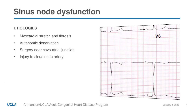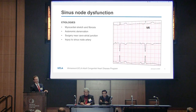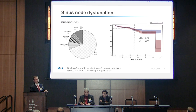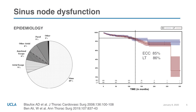Sinus node dysfunction — there are lots of reasons patients with Fontans can develop sinus node dysfunction, including myocardial stretch and fibrosis, especially after lateral tunnel and atrial pulmonary Fontans; autonomic denervation from prior surgery; manipulation near the cavo-atrial junction where the sinus node lives; and potential injury to the sinus node artery. If you look at the data on prevalence and incidence of sinus node dysfunction in the Fontan population, it's estimated to be around 15 percent. The pie chart on the left is from the Pediatric Heart Network study, a cross-sectional study showing junctional rhythm in about six percent of patients and paced rhythm in nine percent, for a total of 15. The Kaplan-Meier curve on the right is from a recent meta-analysis by the Montreal group, and for the modern versions — the extracardiac Fontan and lateral tunnel Fontan — they found an incidence of about 15 percent at 10 years after surgery.